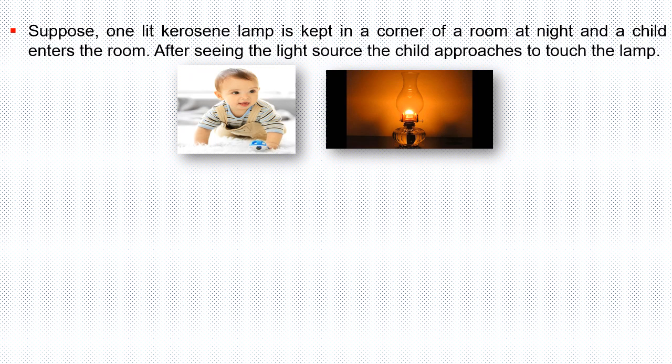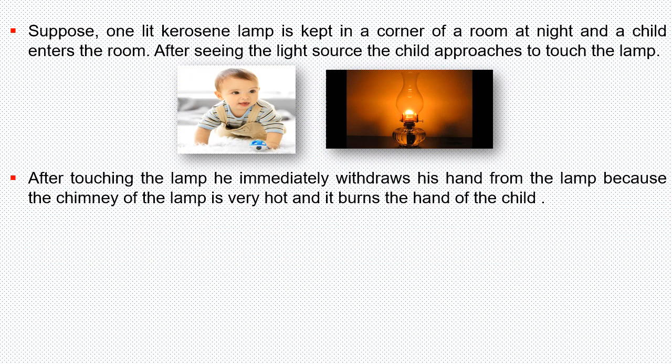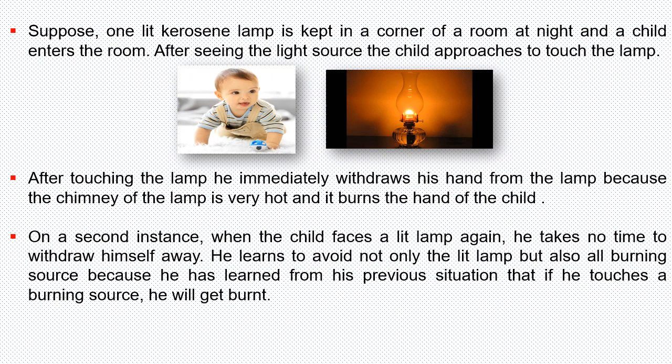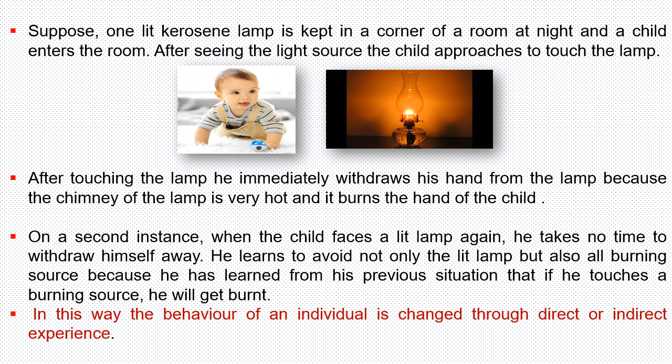Suppose one lit kerosene lamp is kept in a corner of a room at night, and a child enters the room. After seeing the light source, the child approaches to touch the lamp. After touching the lamp, he immediately withdraws his hand because the chimney of the lamp is very hot and it burns his hands. On a second instance, when the child faces a lit lamp again, he takes no time to withdraw himself. He learns to avoid not only the lit lamp but all burning sources, because he has learned that if he touches a burning source, he will get burned. In this way, the behavior of an individual is changed through direct or indirect experience.